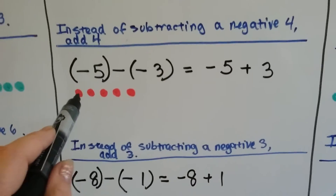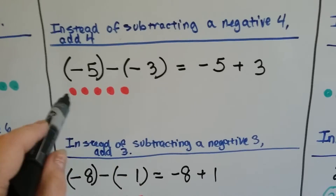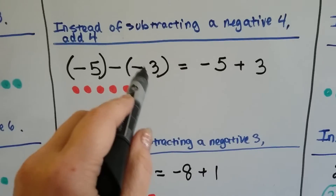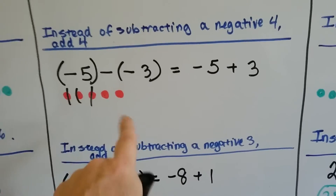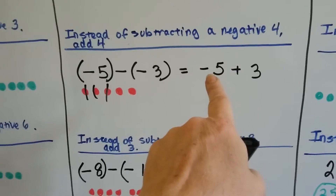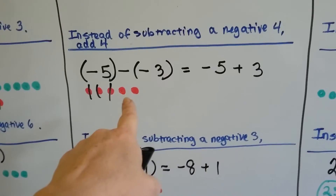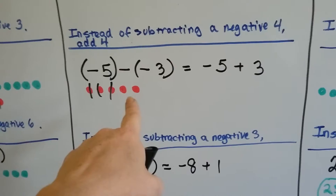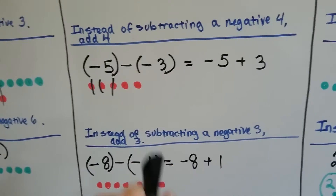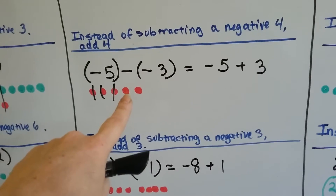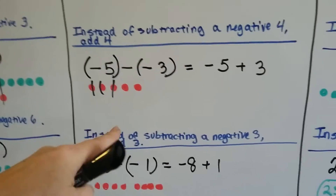Next: negative 5 minus negative 3. We've got 5 red chips, and we're going to take away 3 negative chips — it's like saying you're at negative 5 and you're adding 3. We'll still be negative, at negative 2, but it's bringing us back up to the surface. If we were underwater, we'd now be only 2 feet under the water.